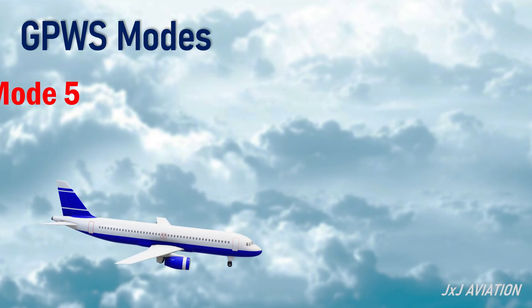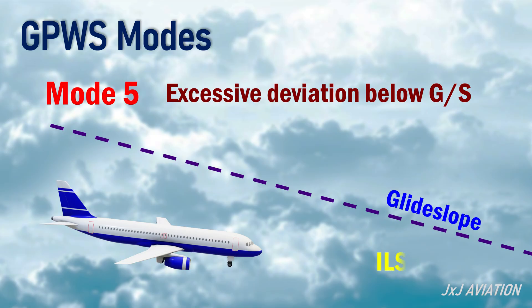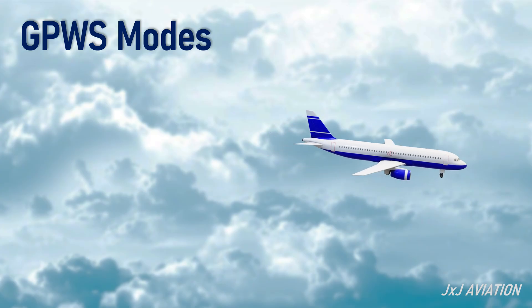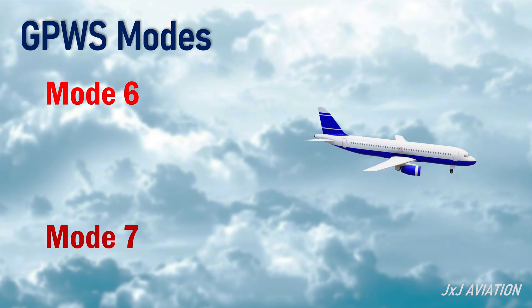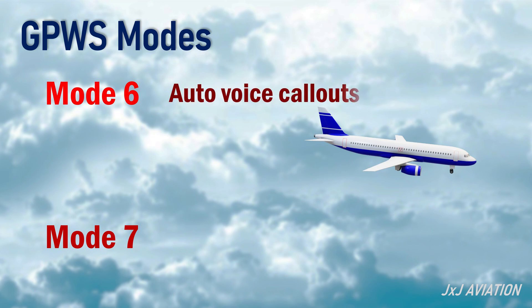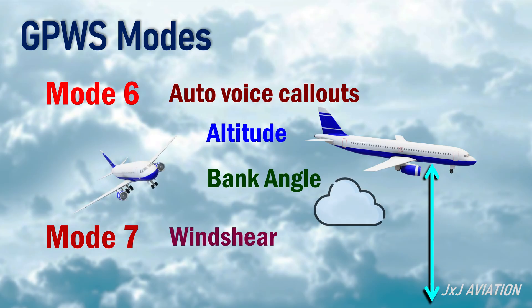Mode 5 is excessive deviation below glide slope. This alert is triggered when an aircraft descends below the correct glide path during an ILS approach. Mode 6 and Mode 7 are included on a few aircraft. Mode 6 gives automated voice call-outs for altitude and bank angle alerts. Mode 7 gives warning for wind shear conditions.